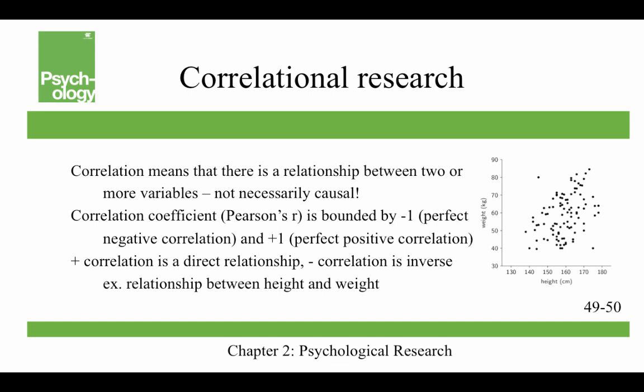Correlation means that there's a relationship between two or more variables and that it's not necessarily causal. A correlation coefficient, known as Pearson's R, is bounded by negative one — a perfect negative or inverse correlation — and plus one, which is a perfect positive or direct correlation. Zero means no correlation. A positive correlation is a direct relationship and a negative correlation is an inverse relationship. An example is the relationship between height and weight — that's a positive or direct relationship because in general, taller people weigh more.